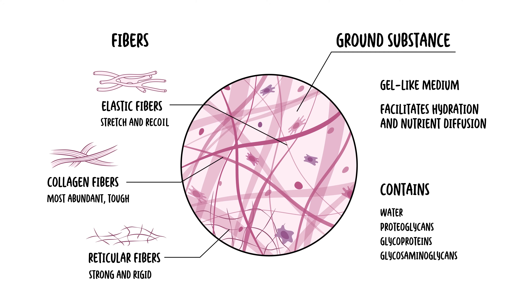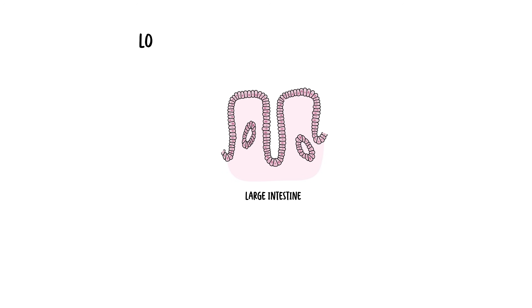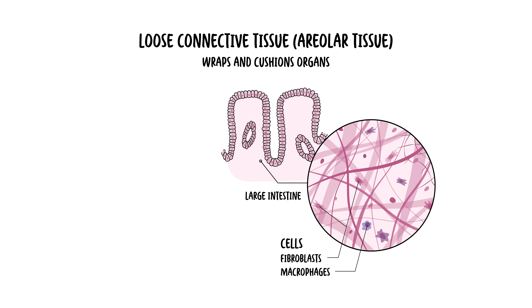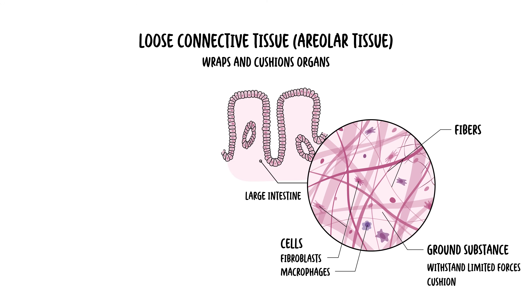Now let's talk about the two types of connective tissue, beginning with connective tissue proper. Connective tissue proper includes loose connective tissue, also known as areolar tissue. These basically wrap and cushion organs. These are the epitome of flexibility and softness — it's like the body's version of packing material, filling spaces with a soft matrix that holds everything in place, while allowing for the exchange of nutrients and waste between the bloodstream and the cells.